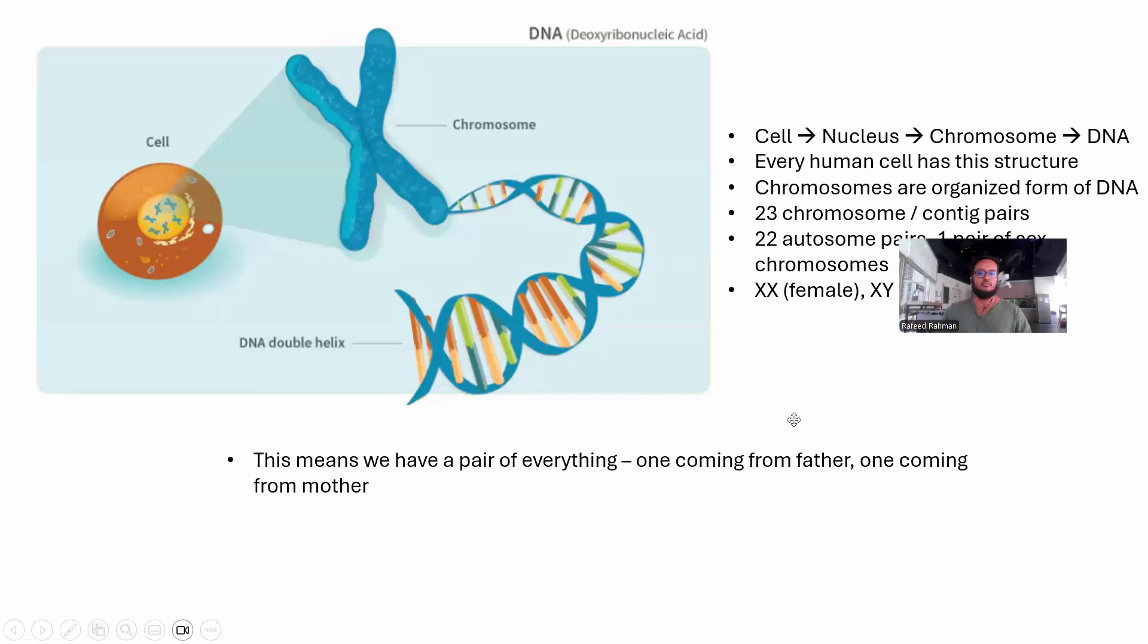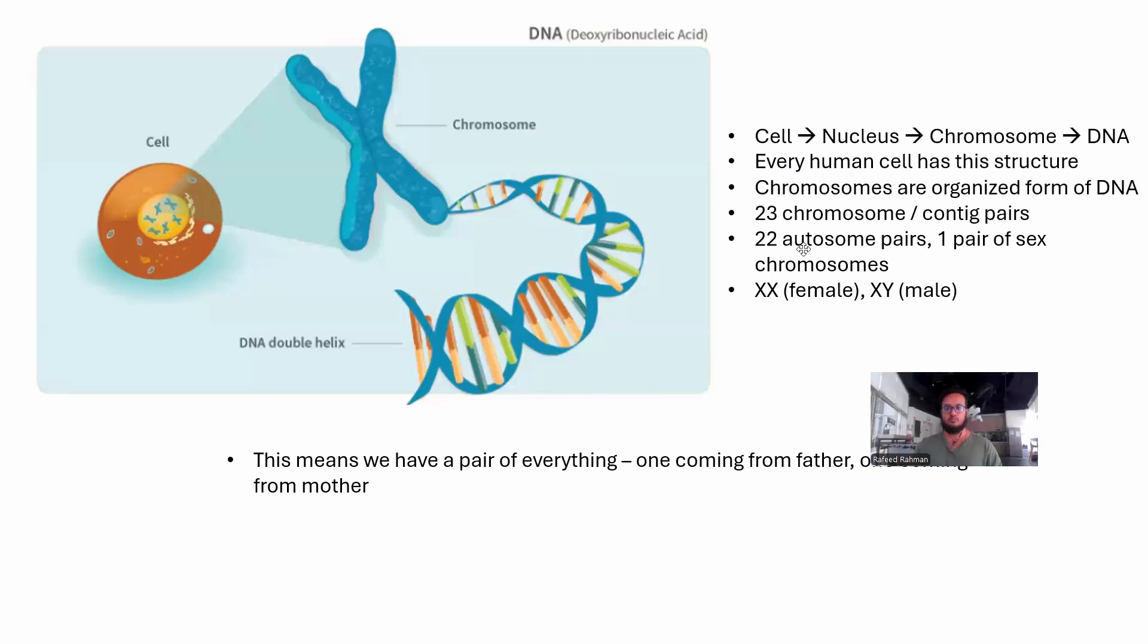Now the thing is, this actually means something. This actually means we actually have a pair of everything. So it's not single. Everything we have, every location we have in the DNA, it is actually not single. It is actually paired. So one of that comes from the father and one of that comes from the mother. So when I'm saying 22 autosome pairs, one of those pairs actually comes from the father and the other one comes from the mother. And this is why we are actually called diploid. This entire architecture is called diploid, the diploid structure.